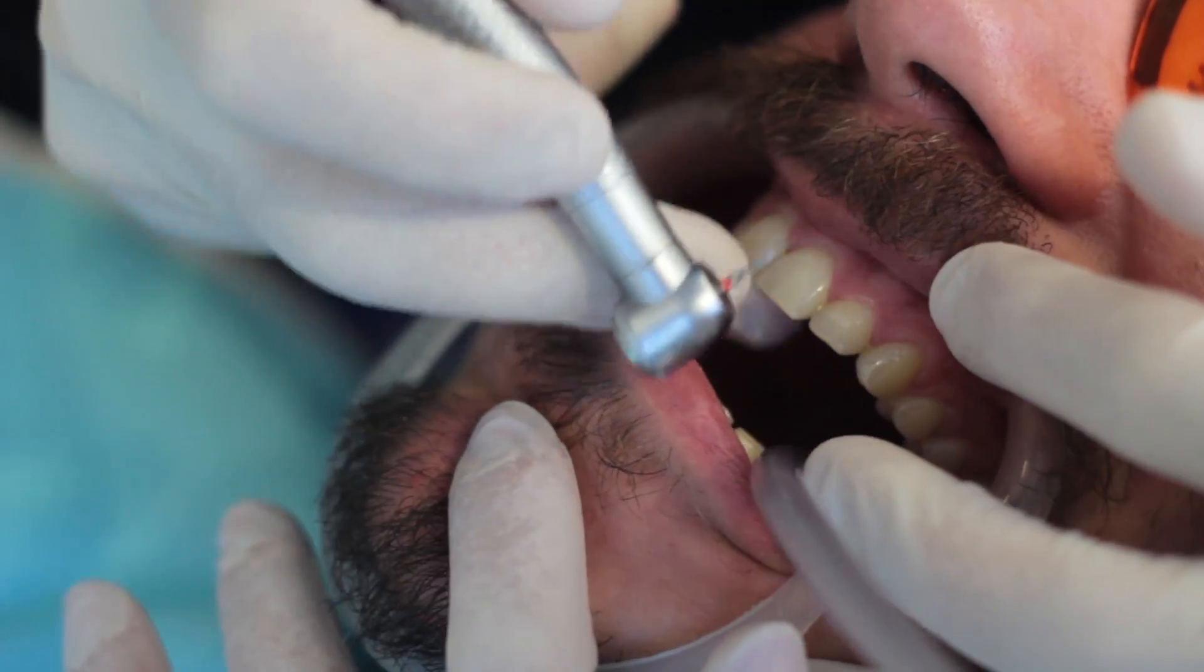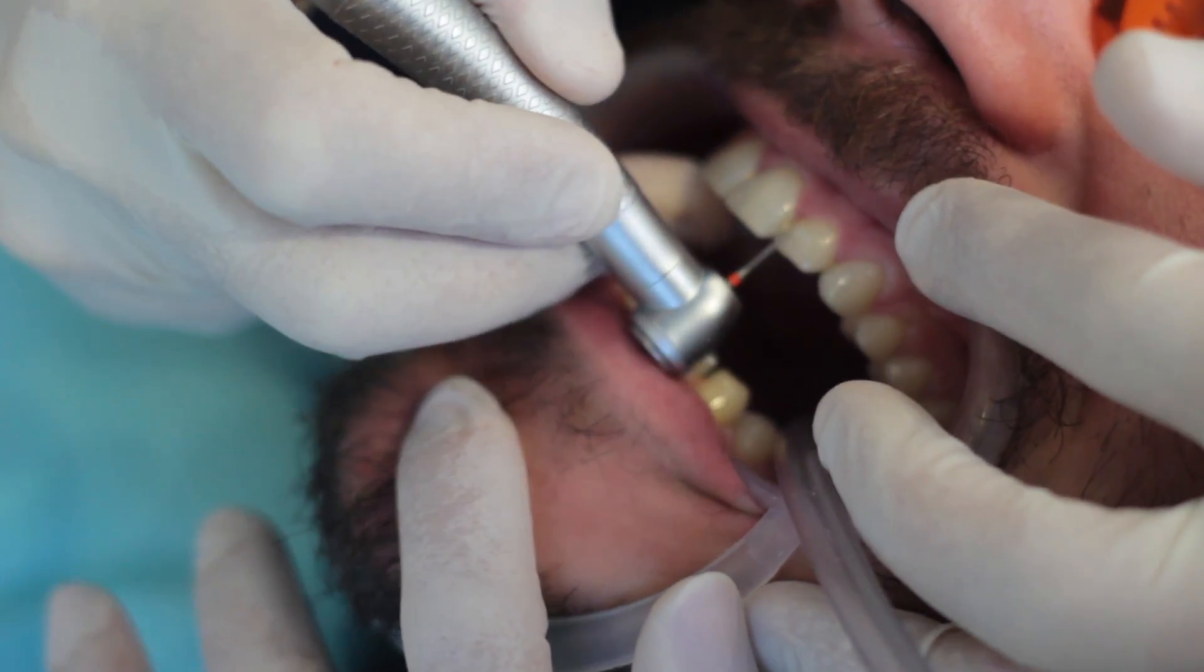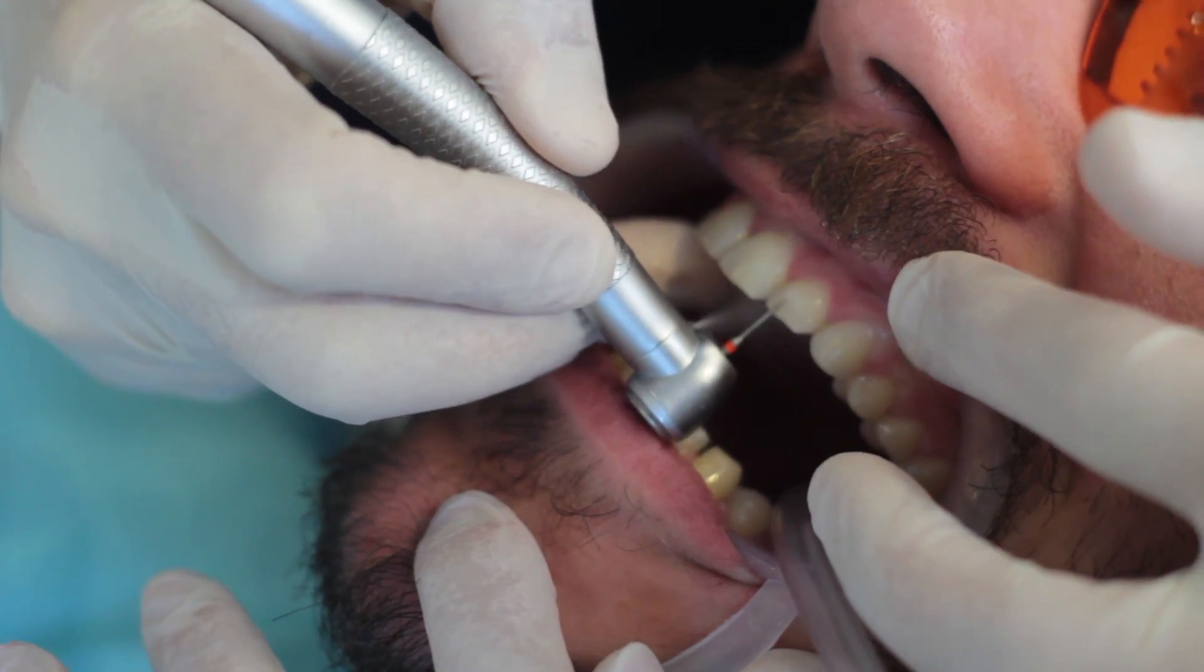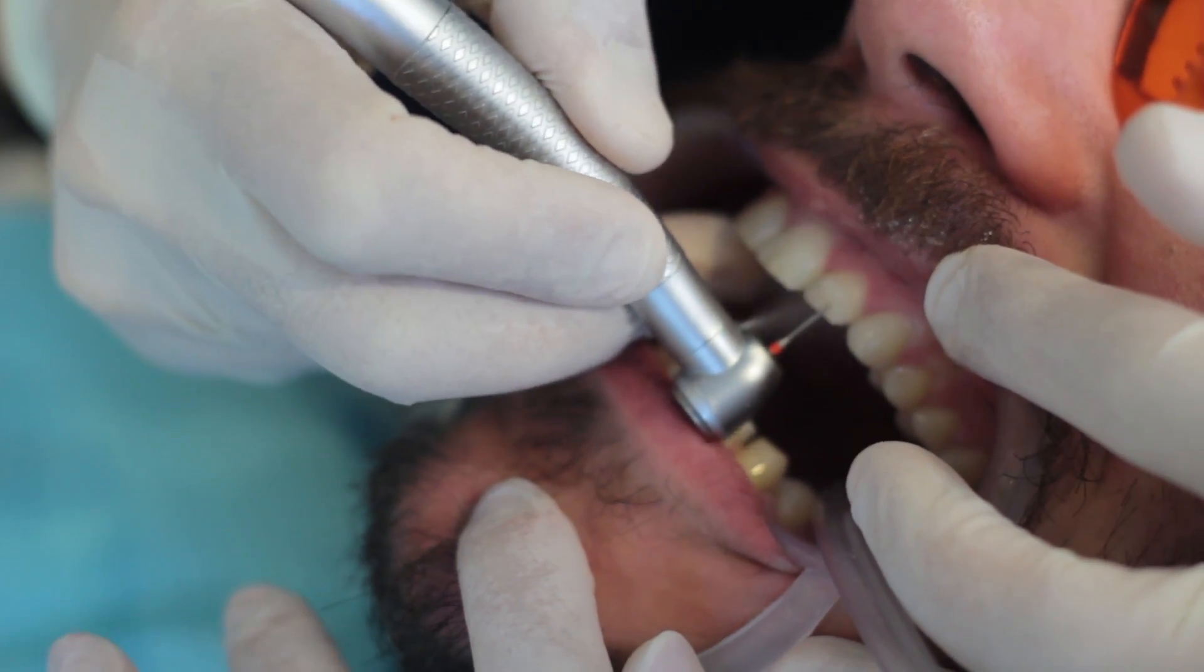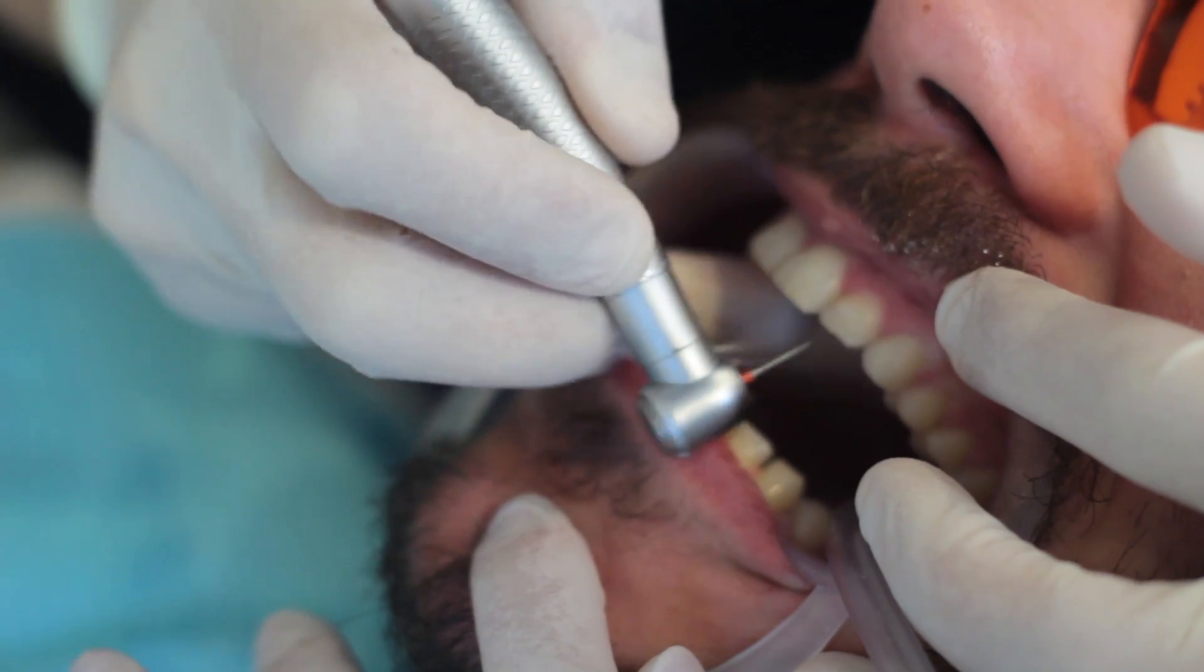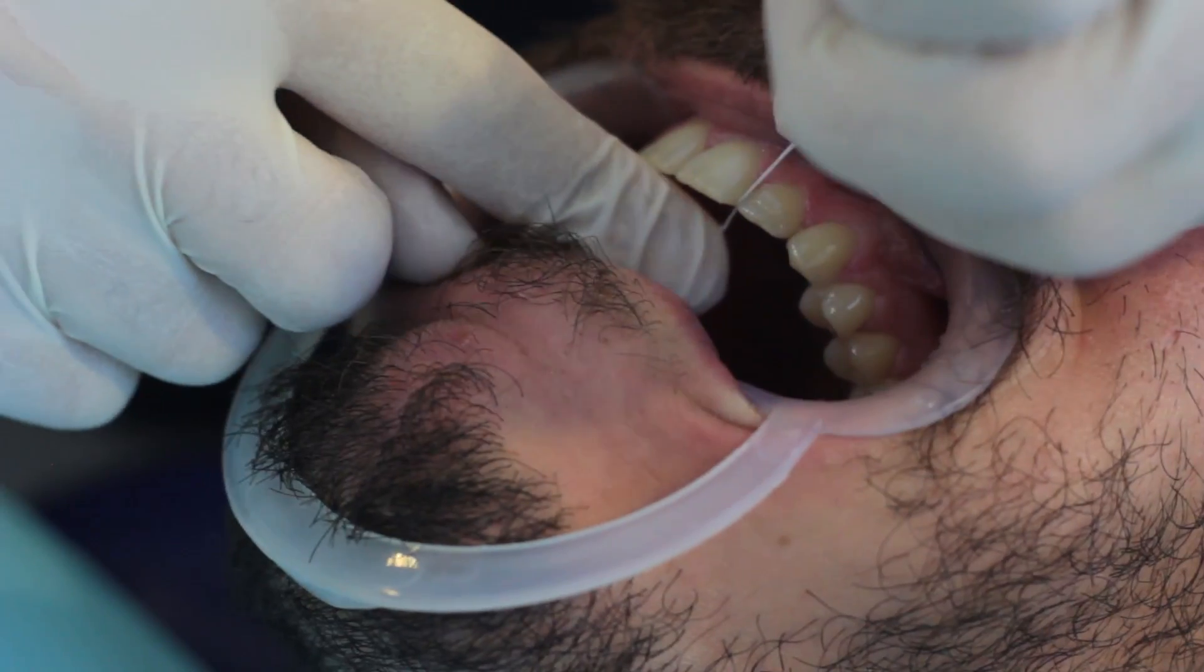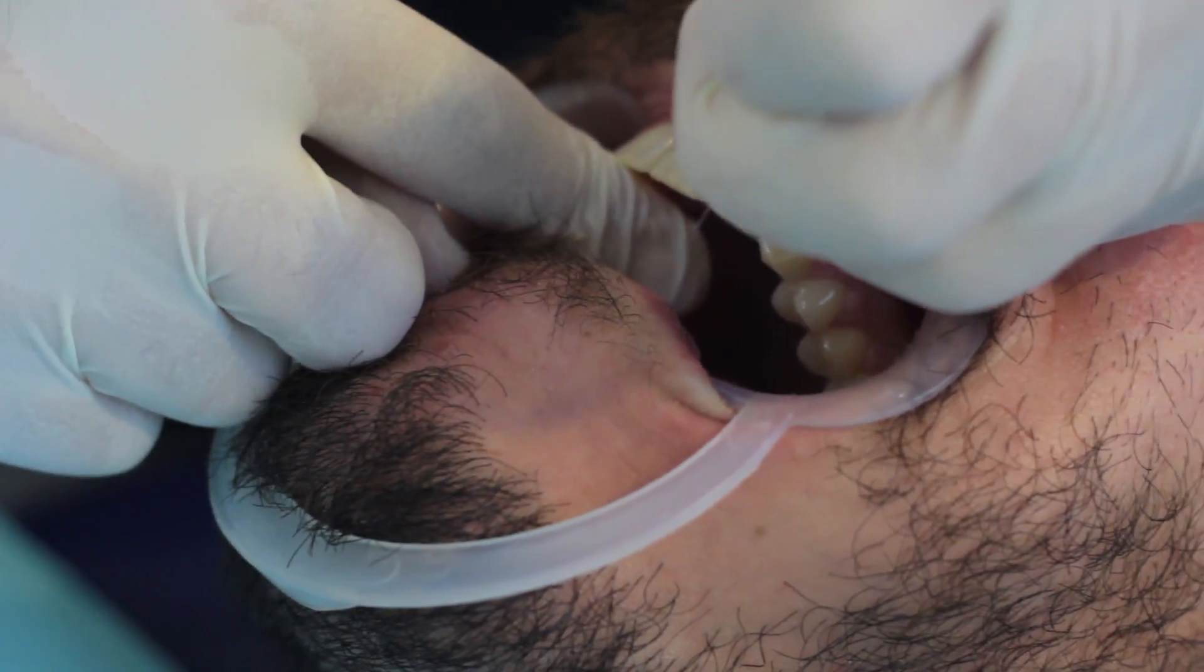Carefully remove the attachment template and inspect the attachment. We then use a carbide finishing bar to remove any excess flash material. Afterwards, we use dental floss mesially and distally to check the contact areas.